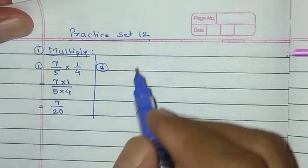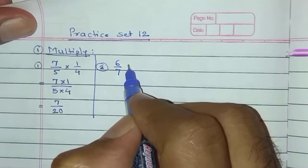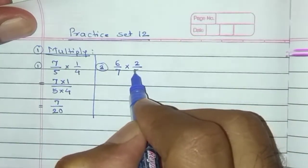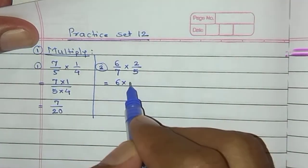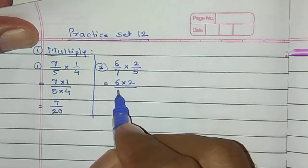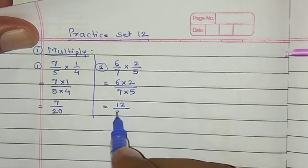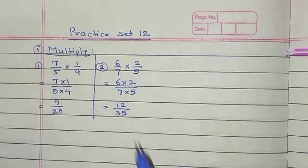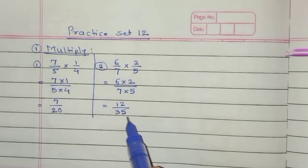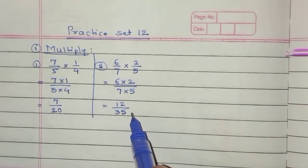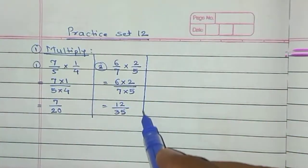Number 2: second example is 6/7 multiplied by 2/5. Is equal to numerator multiplied by numerator: 6 multiplied by 2, upon 7 multiplied by 5. Is equal to 12/35. Can we divide both numbers by any one number? This is our final answer: 12/35.